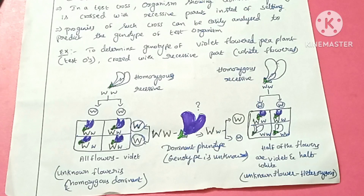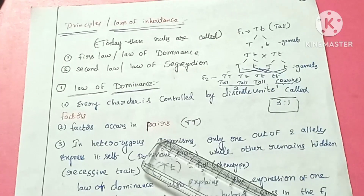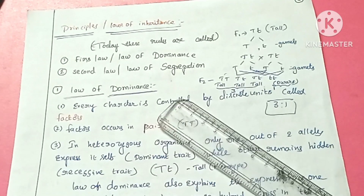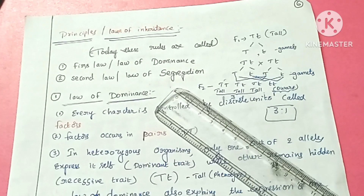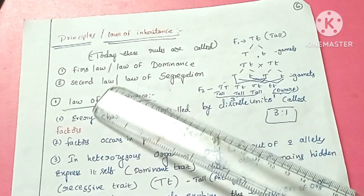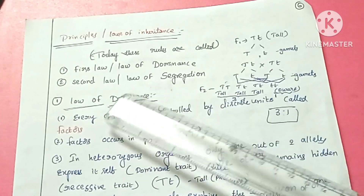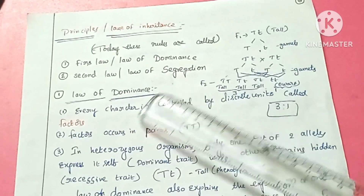On the basis of his observations from the monohybrid cross, Mendel proposed two rules called the principles or laws of inheritance. The first law is the law of dominance, and the second law is the law of segregation.